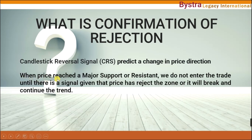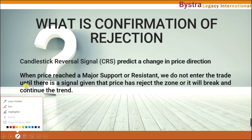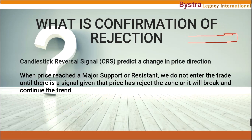The CRS is used to predict a change in price direction. When a price reaches a major support or resistance, we do not enter the trade until there is a signal that the price has rejected the zone or will break and continue the trend. Even on a breakout, when the price comes to retest the zone as a new support, it must show a confirmation of rejection. Only then can we find a setup.